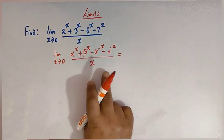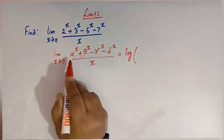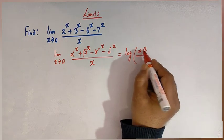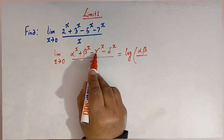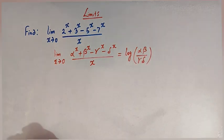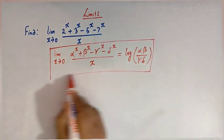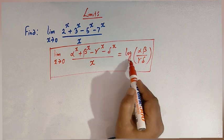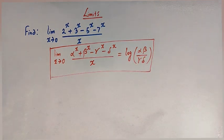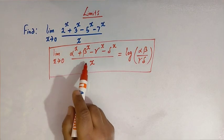We can write the direct value as the log of the product of alpha and beta divided by the product of gamma and delta. So the value of this type of limit is equal to log of alpha times beta divided by gamma times delta. Now if we compare this limit with this one, we can easily identify the parameters.